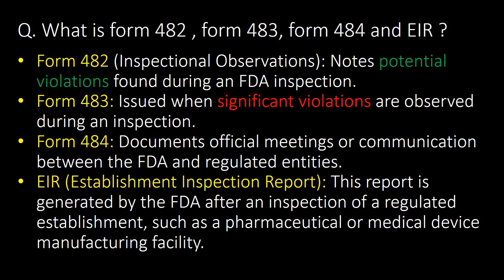What are Form 482, 483, 484, and EIR? Form 482 notes potential violations found during an FDA inspection. Form 483 is issued when significant violations are observed during an inspection. Form 484 documents official meetings or communications between the FDA and regulated entities. EIR stands for Establishment Inspection Report.